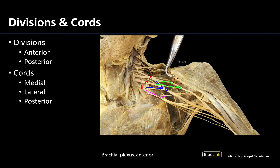The cords are named based on their relative position to the axillary artery, which has been removed to better see the brachial plexus. If you imagine the axillary artery running through the middle region, it would be superficial to the posterior cord. With the arm in anatomical position, the lateral cord is lateral to the axillary artery and the medial cord is medial. When the arm is abducted — as in most dissections — the lateral cord appears more superior and the medial cord appears more inferior.